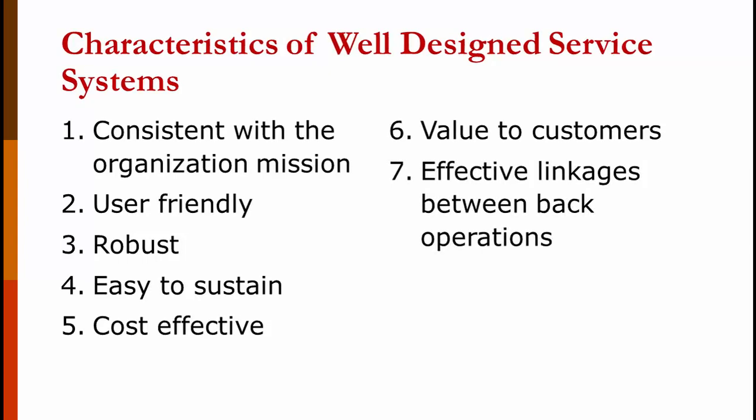Seven: effective linkages between back operations. The back operations are the things happening after you place your order — the things you can't see. So if you order a steak extremely rare, that linkage is when the order taker communicates that to the kitchen. Or you go into a hotel and ask for a 6 a.m. wake-up call — the person booking you in has to put that into the computer and communicate it to the back office. Eight: it has a single unifying theme — it's easy to describe as a hamburger joint or a car dealership. A number of years ago McDonald's ran a test market for McPizza. Pizzas are produced very differently than hamburgers, people have different expectations, and they often take a lot longer to fix, so it was outside the unifying theme and it didn't go well.